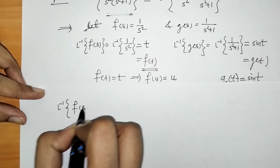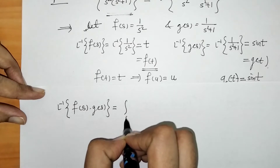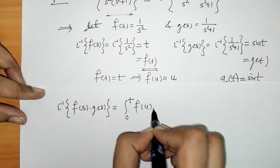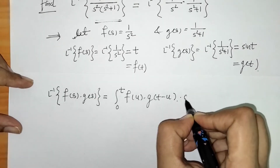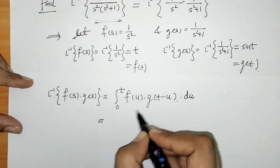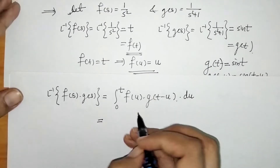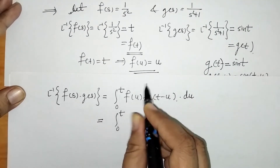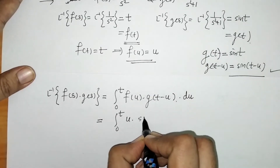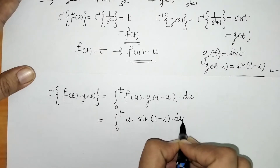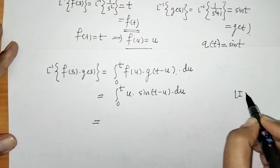So L⁻¹{F(s)·G(s)} is given by the integral from 0 to t of f(u)·g(t - u) du. Substituting, this becomes the integral from 0 to t of u·sin(t - u) du. Now we have to find this integration — by the LIATE rule, u is the first function and sin(t - u) is the second.